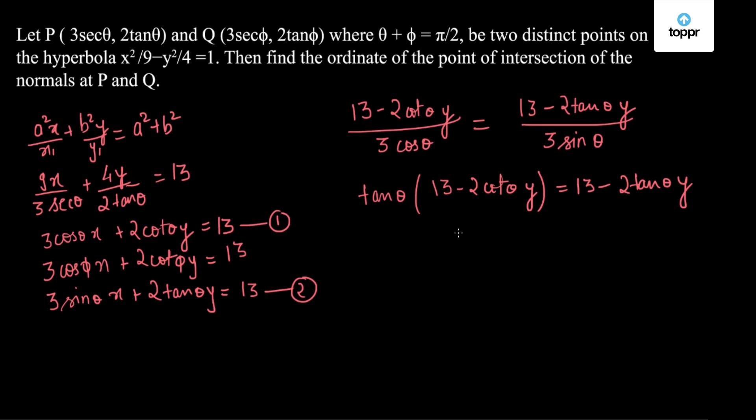So this is an equation in variable y which if I solve I will get the value of y as -13/2. So this y which is the ordinate of the point of intersection of normals is the solution to my problem.